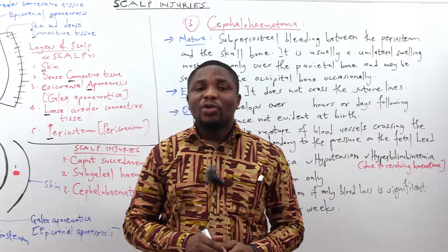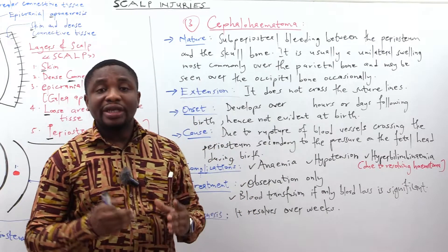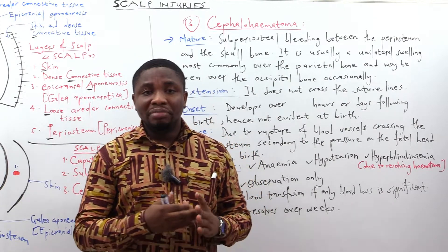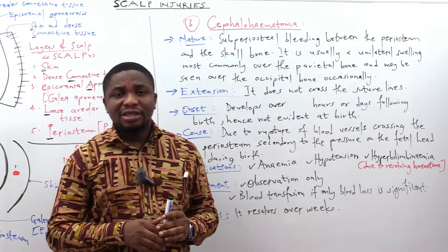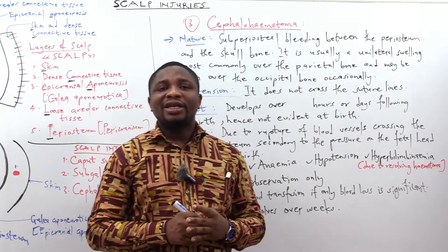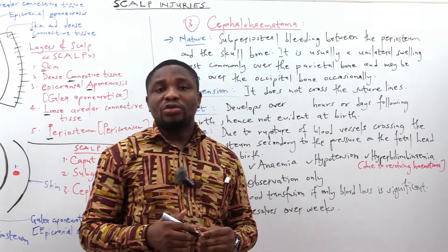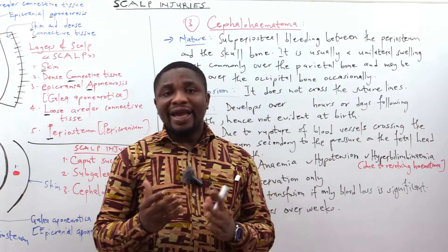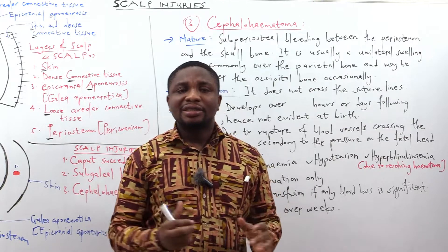The last type of scalp injury is cephalohematoma. In terms of nature, there is subperiosteal bleeding between the periosteum and the scalp bone — it is called subperiosteal because it is in the space below the periosteum. Cephalohematoma is usually a unilateral swelling, most commonly over the parietal bone, and may occasionally be seen over the occipital bone. For extension, it does not cross the suture lines, because it occurs below the periosteum, and the periosteum is continuous with the endosteum of the scalp bone, thereby limiting the bleeding.